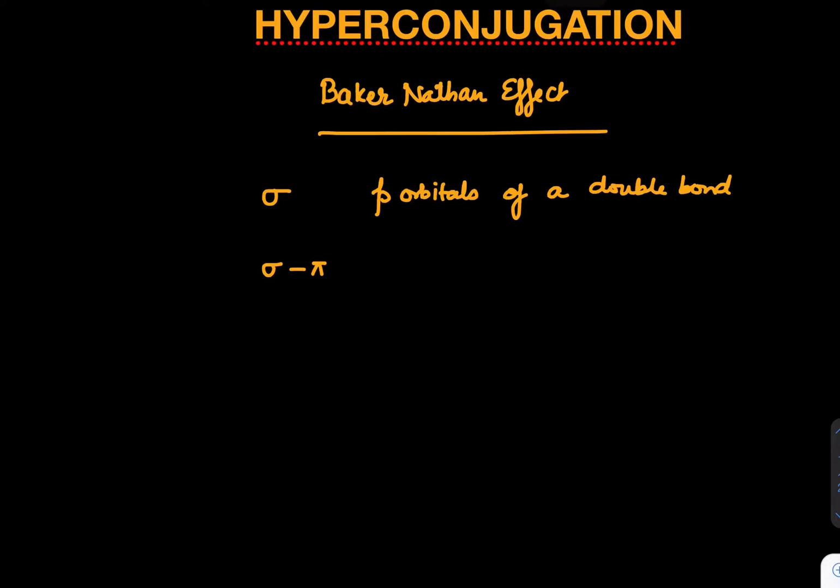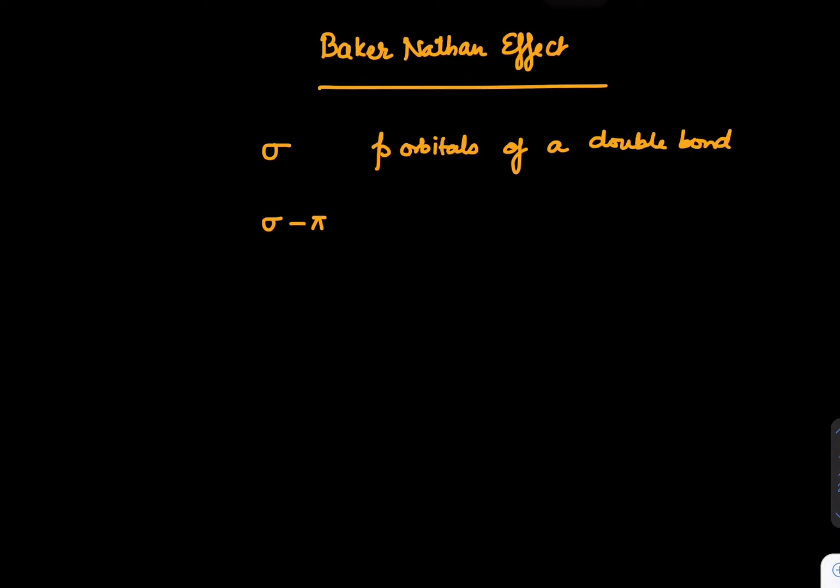Three types of hyperconjugation can exist. One is sigma of C-H bond involved with positive charge conjugation. Second is sigma of C-H bond involved with odd electron conjugation. And third is sigma of C-H bond involved with pi conjugation. So these are three varieties we have.